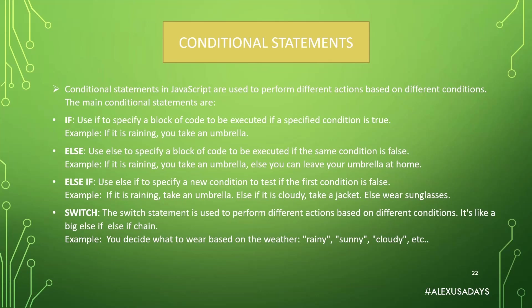The last one is `switch`. The switch statement is used to perform different actions based on different conditions. It's like a big else-if chain, so instead of typing `else if` multiple times, if you have multiple conditions to choose from you can just use switch, and if the condition is met the block of code will be executed. For example, you decide what to wear based on the weather — rainy, sunny, cloudy, and so on — and whatever the condition is, through the switch statement you can execute the specific block of code that matches.